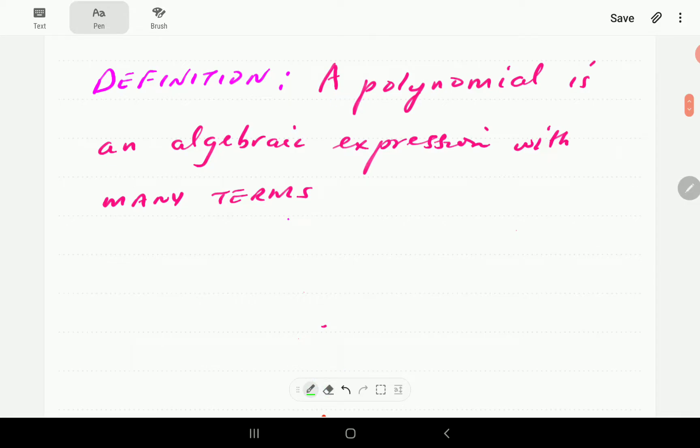So we could think a polynomial is an algebraic expression with many terms. Of course, the many is for poly. However, this description is totally incorrect.